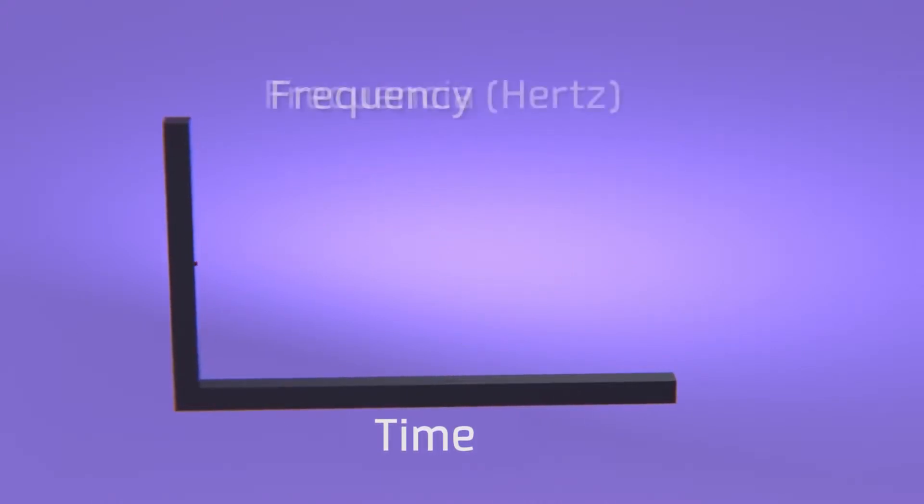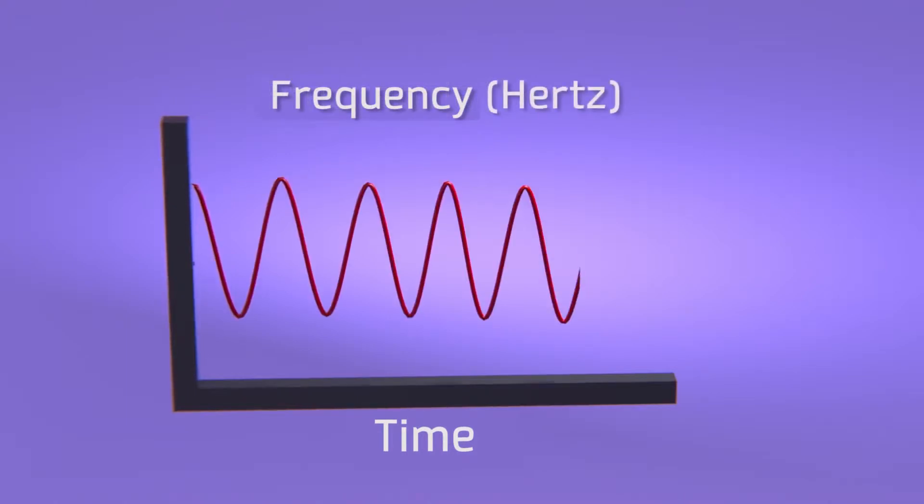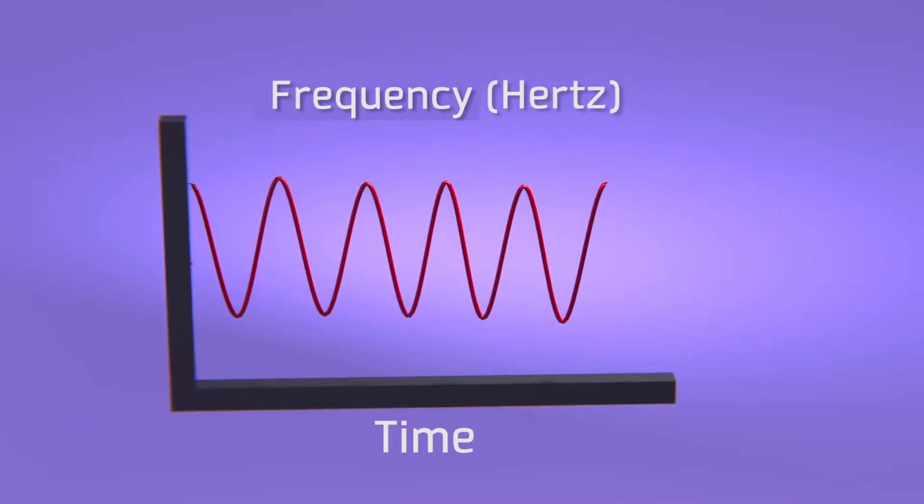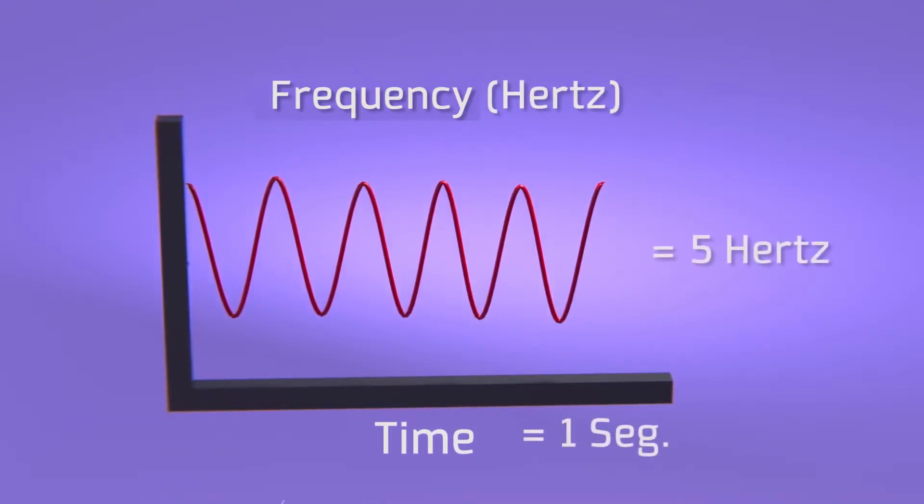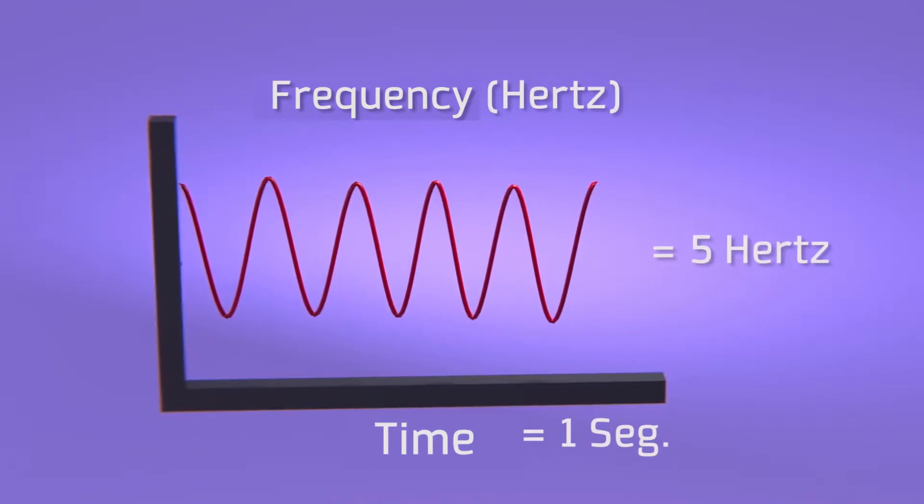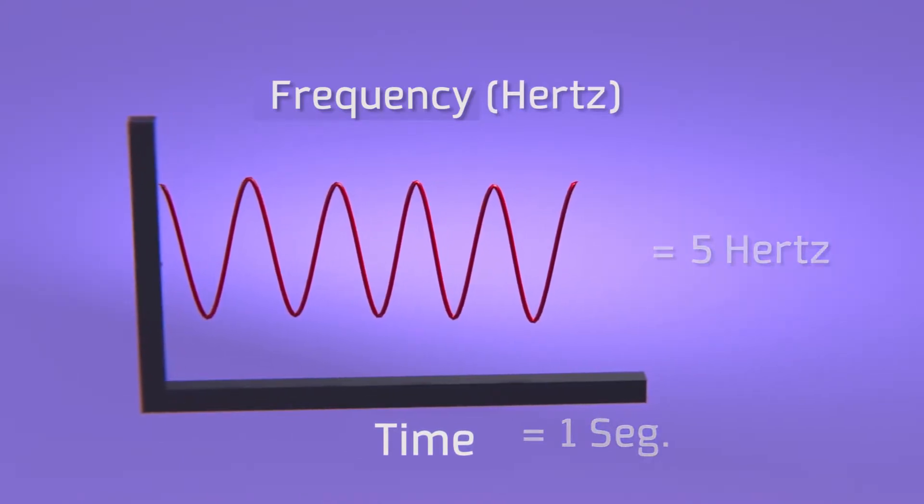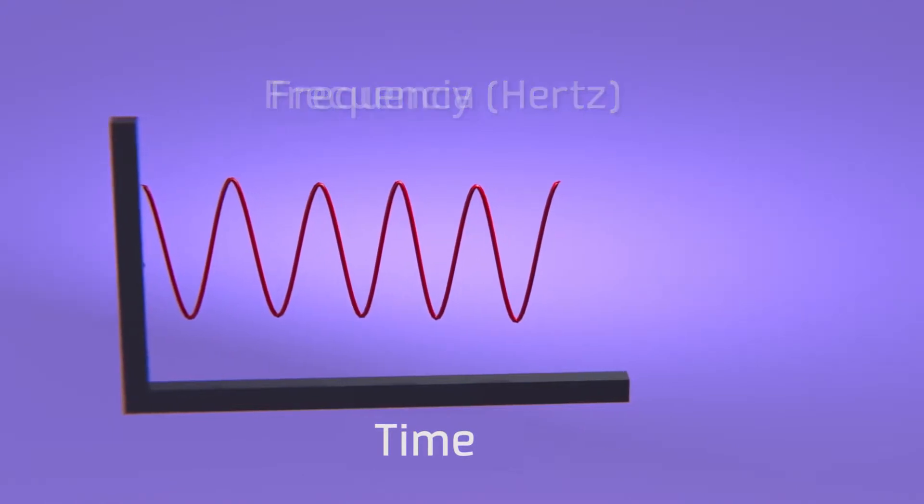The second characteristic is frequency, which is how many waves occur in a given amount of time. For the following example, if five waves occur in a second, then that signal has a frequency of 5 Hz, a unit of measure that was named after Heinrich Hertz, who also investigated the propagation of electromagnetic waves.